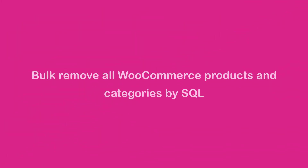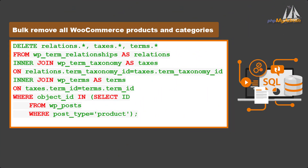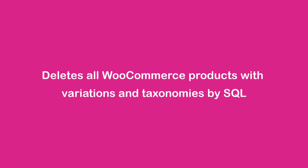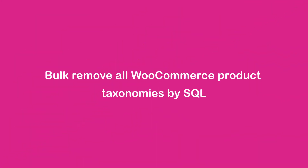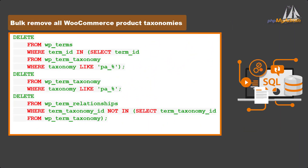Bulk delete all WooCommerce products and categories by SQL. The following code is for deleting all related products and categories in WooCommerce. Copy and paste the following code in the indicated section, then press Ctrl+Enter and wait for the code to be applied. Delete all WooCommerce products with variations and taxonomies by SQL — the following code handles that. Bulk remove all WooCommerce product taxonomies by SQL: if you want to remove only the product attributes, you can run the following code.